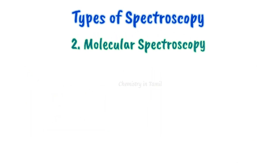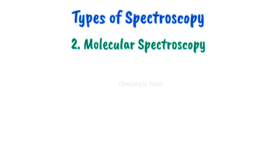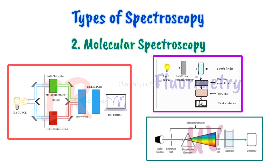Second one: molecular spectroscopy. Here, the energy changes — the light energy — is absorbed, emitted, or causes vibration at the molecular level. We will learn how energy changes in molecules. Examples include visible spectroscopy, UV spectroscopy, IR spectroscopy, and fluorimetry.